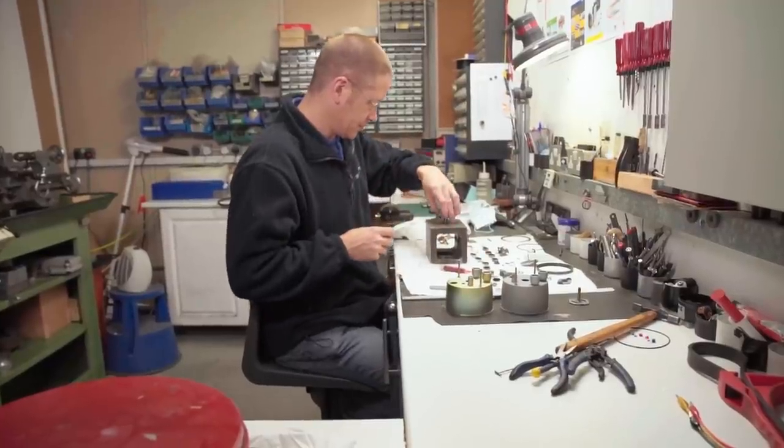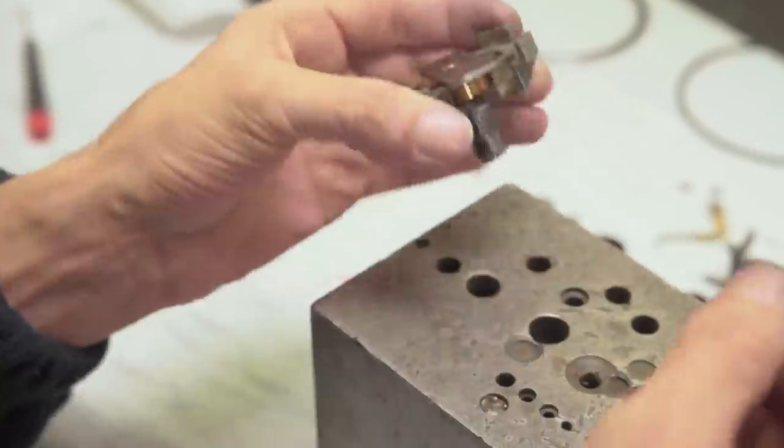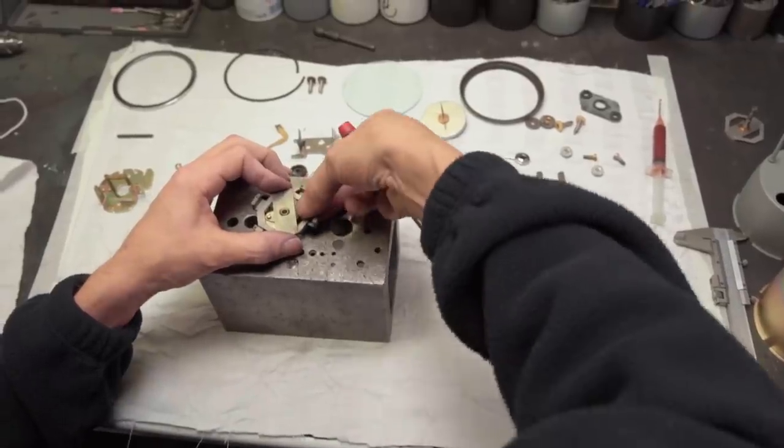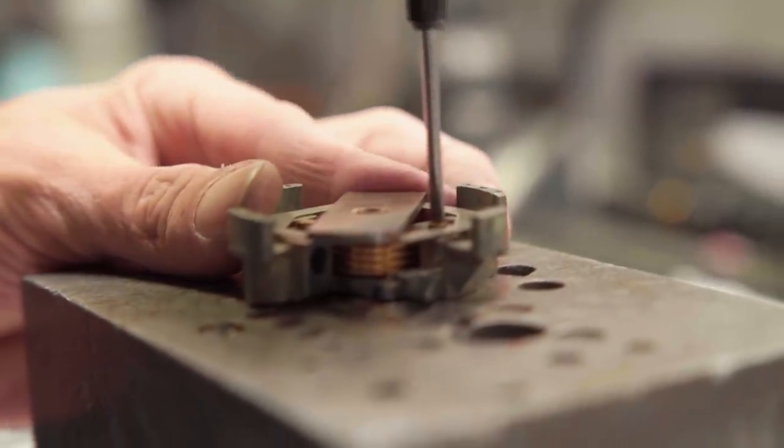The next step is to put the speed cup on top and just check that it runs freely. And then we're going to mount the top plate, reattach the hair spring and start building up the counter assembly.